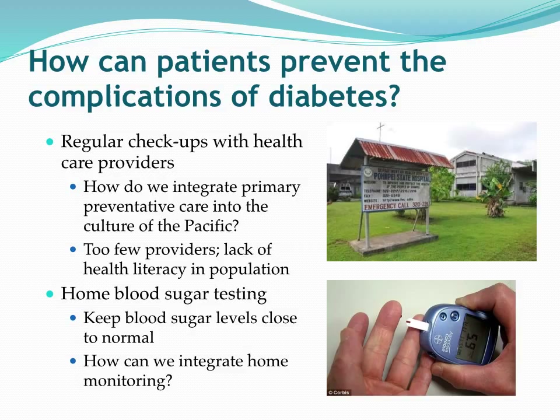For long-term sustainability, you need to find a way to provide monitoring strips and get these individuals integrated into a community primary care setting — whether it be a community health center, a health assistant post, or a nursing post — so that they have somewhere to turn to when their blood glucose monitoring gets out of whack and they need actual medical assistance.